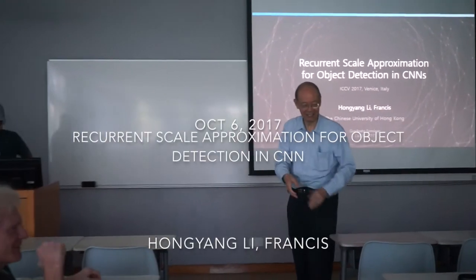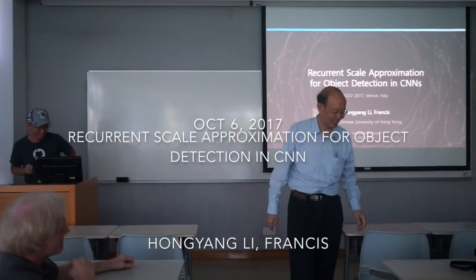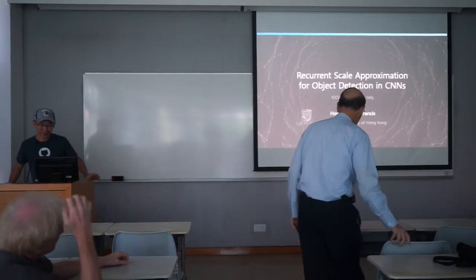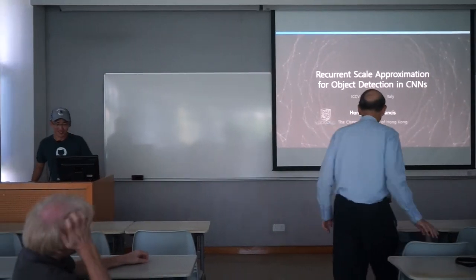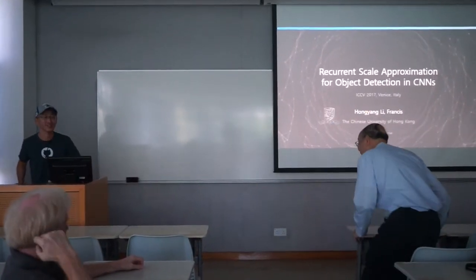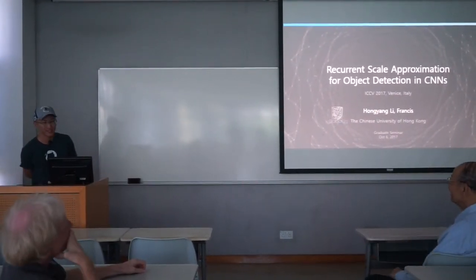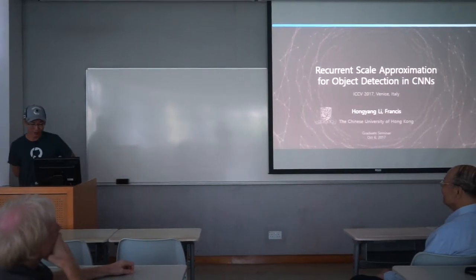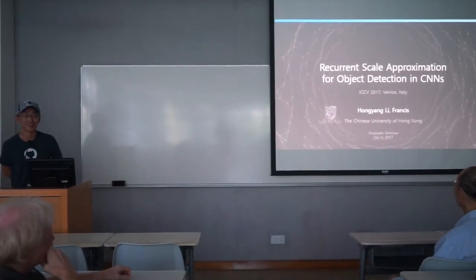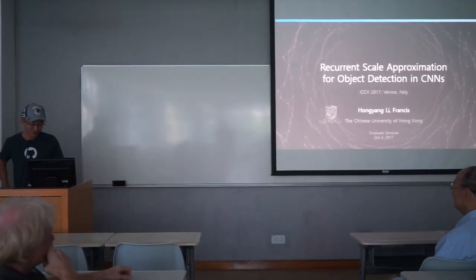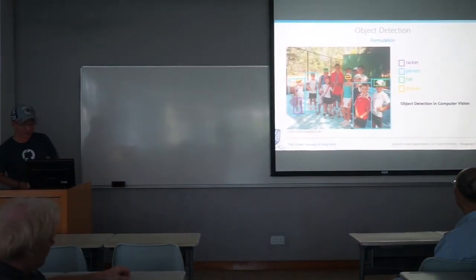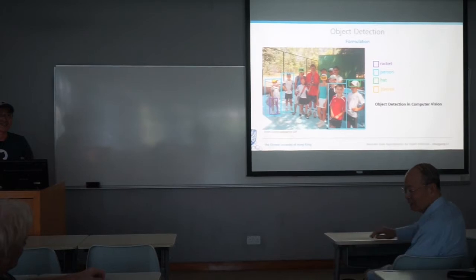Good afternoon everyone. Today's talk is on object detection in computer vision. The topic is recurrent scale approximation for object detection in neural networks. For a general audience, what is object detection?